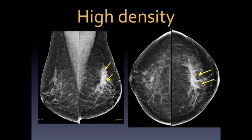Now let's look at distribution, subdivided into diffuse, regional, grouped, linear, and segmental. Diffuse is a random distribution throughout the breasts — you can see this with multiple round punctate calcifications diffusely seen throughout both breasts. This is very uncommonly associated with malignancy.